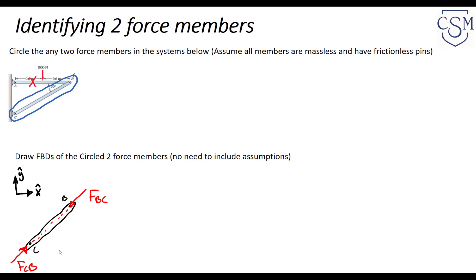A free body diagram of member BC shows forces directed along the line of action from C to B. Here the member is drawn in compression, but it may be in tension — we don't know the magnitude or whether it's in tension or compression. Equilibrium analysis will determine that.